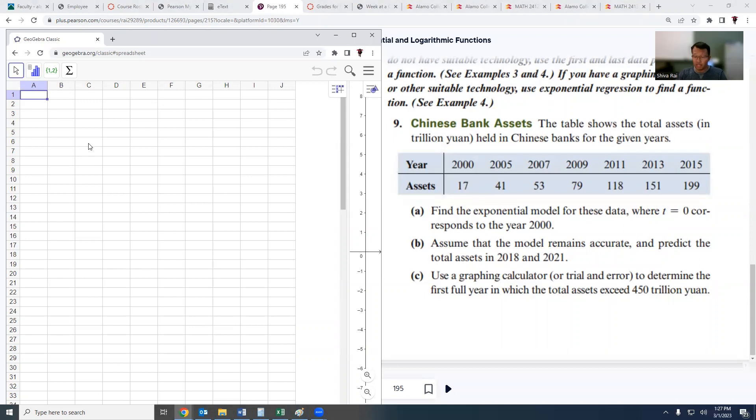Let me type all the data points. Since it is saying t equals zero, that would be for the year 2000. Let's write down this as x and this is y. So this is zero, for 2005 it's 5, for 2007 it's 7, 2009 it's 9, 11 for 2011, 13, and 15. The corresponding monetary amounts are 17, 41, 53, 79, 118, 151, and 199.